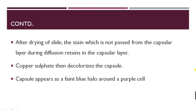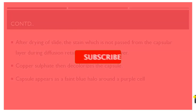After drying, the stain that has not passed from the capsular layer during diffusion is retained in the capsular layer. The copper sulfate then decolorizes the capsule so that it appears as a faint blue halo around a purple cell. That is how we appreciate capsule staining by His method. If you have any doubts, please put them in the comment section, and please do like, share, and subscribe to our channel.